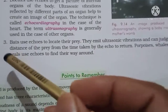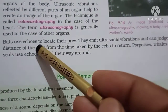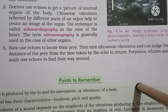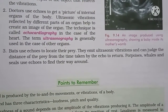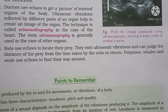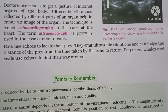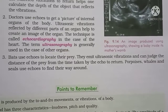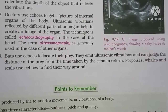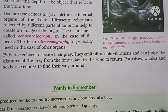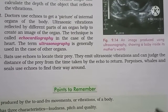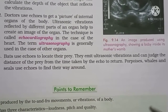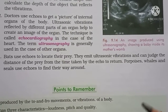Bats use echoes to locate their prey. They emit ultrasonic vibrations, which go and strike the prey or an obstacle in their path and return to them. They then judge how much distance the prey or object is from them. By the help of their sense organ they find out whether the thing from which the sound reflected is their prey or an obstacle.